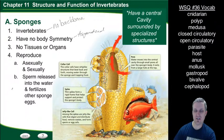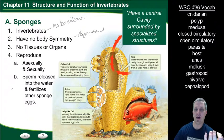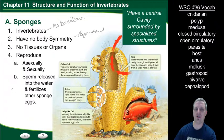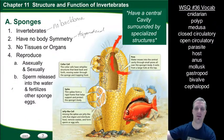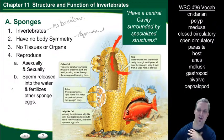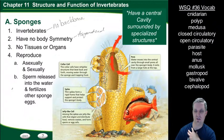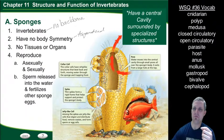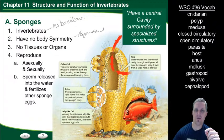Sponges can reproduce asexually and sexually. The way they reproduce sexually is interesting — sperm will literally be released into the water by one sponge and it will end up fertilizing the eggs of another sponge, producing their offspring.